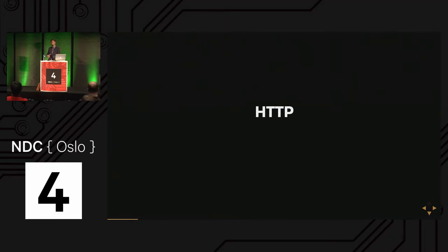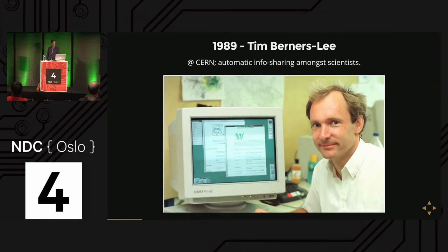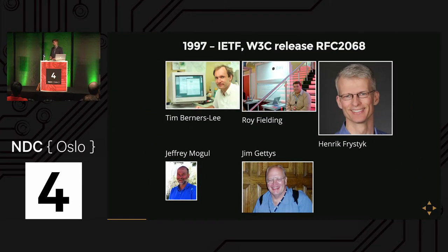Let's look at HTTP, because that's what all of this is based around. It was invented in 1989 by Tim Berners-Lee, who was working at CERN and invented it as an information retrieval system — he wanted to share research with other scientists. Quite a bit later everything was standardized and formalized. The IETF and W3C released RFC 2068 in 1997, which was the formal specification for HTTP 1.1. But even before then, we had Netscape, Internet Explorer, and the browser wars, and people had started to discover what the Internet could be.